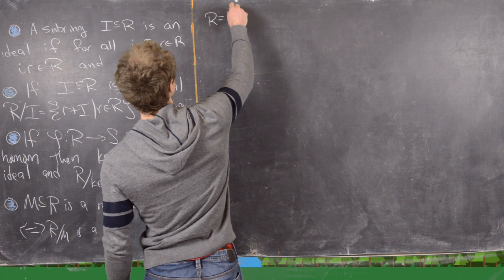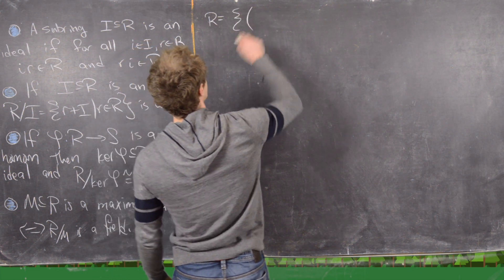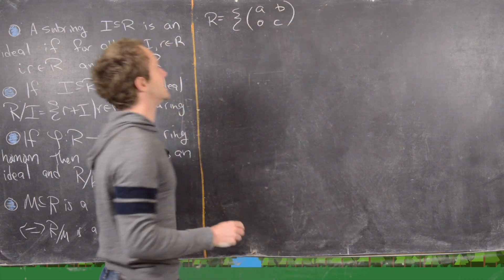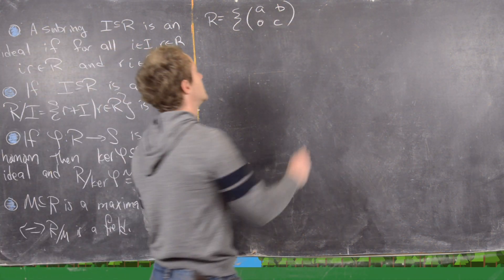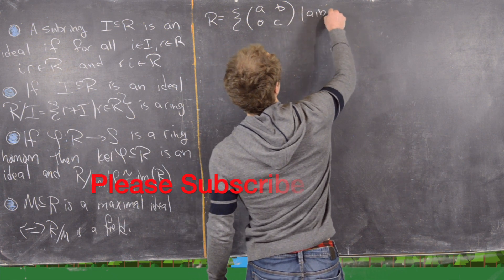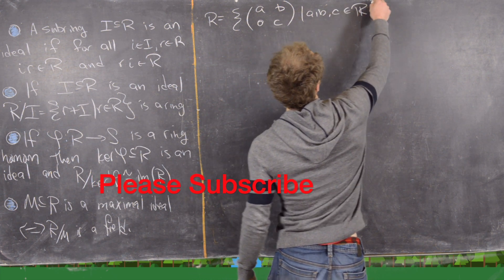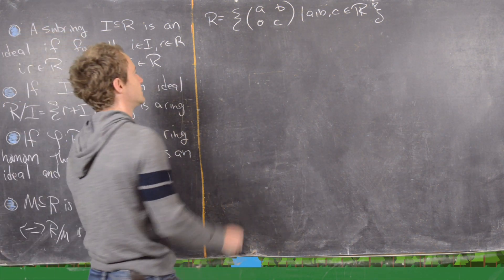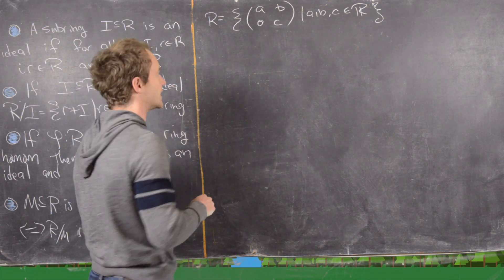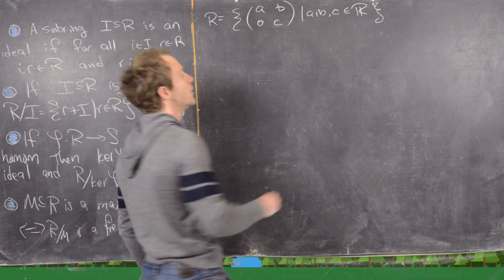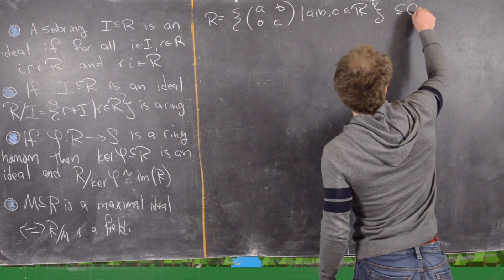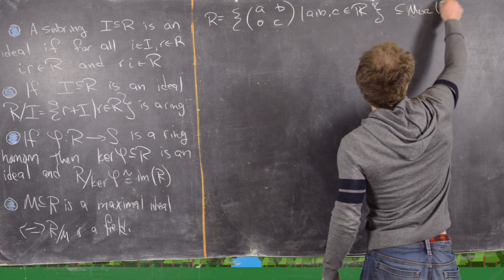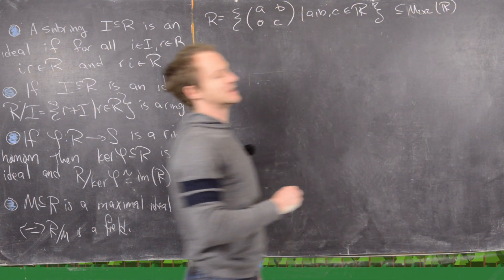Let R be the ring of upper triangular 2x2 matrices. Those are of the form [a, b; 0, c], where a, b, and c are real numbers.